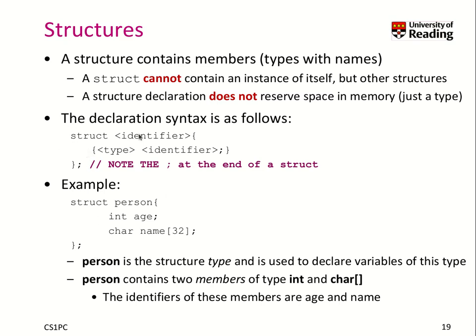Here you see in Backus-Naur form this declaration syntax, and you can have any number of identifiers and types underneath. Person is now of the structure type, and we can use this struct person as a type to declare variables of it. We have two members: an int and a character array with these two identifiers.